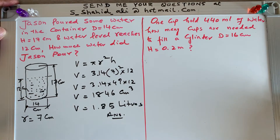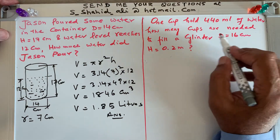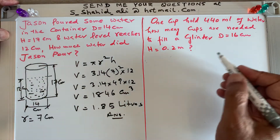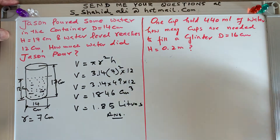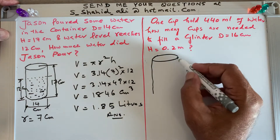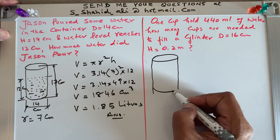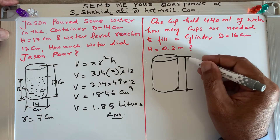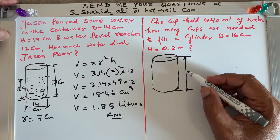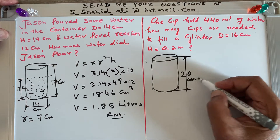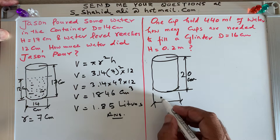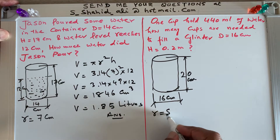For the second part, the question reads: one cup holds 440 milliliters of water. How many cups are needed to fill a cylinder of diameter 16 centimeters and height 0.2 meters? We need to do one conversion first: height is 0.2 meters, which equals 20 centimeters. Diameter is 16 centimeters, so radius is 8 centimeters.